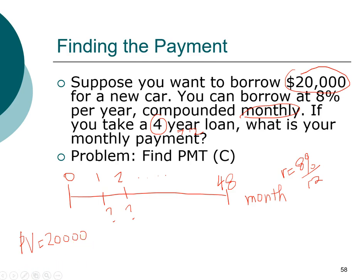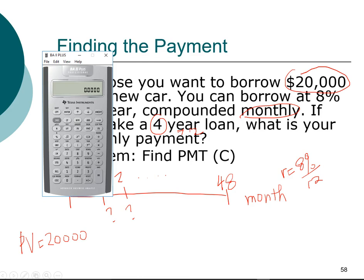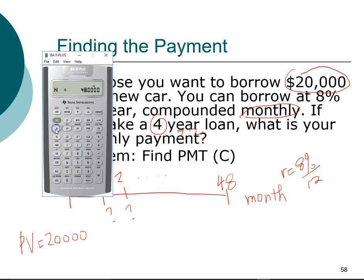Now we have all the information we need to compute the payment. Using the calculator in ending mode for an ordinary annuity, I'll reset it by clearing TVM. Present value is $20,000 — kept positive because the bank is giving me the money. Interest rate is 8 divided by 12, and our investment horizon is 48 months. Computing the payment gives us a cash flow of $488 per month for this car.